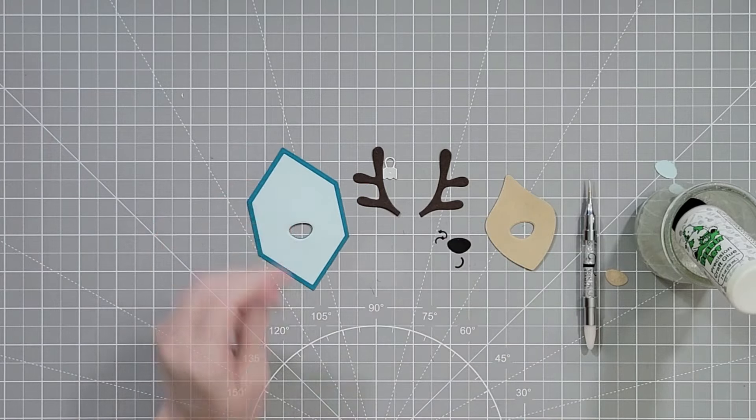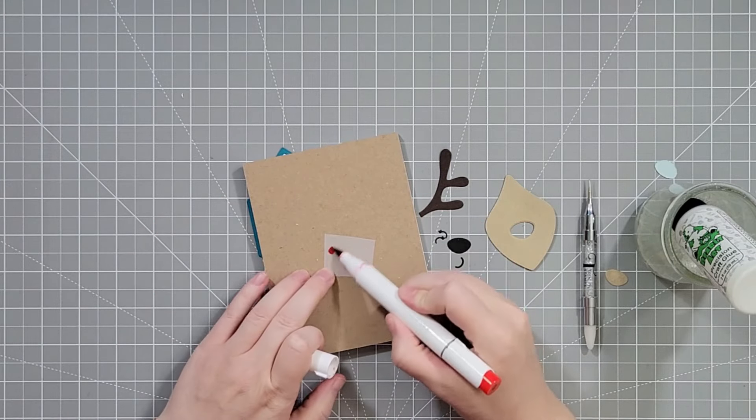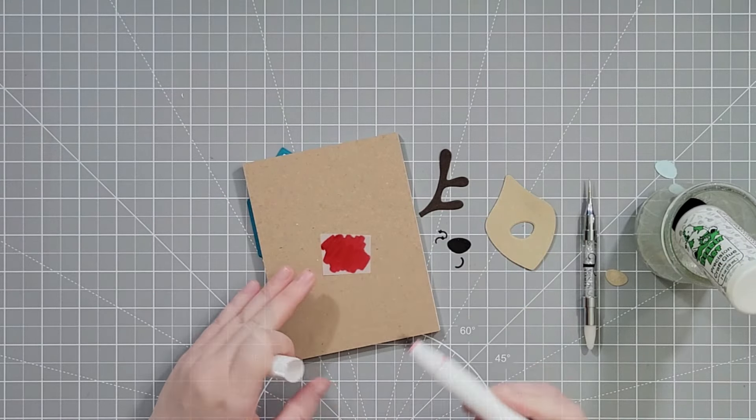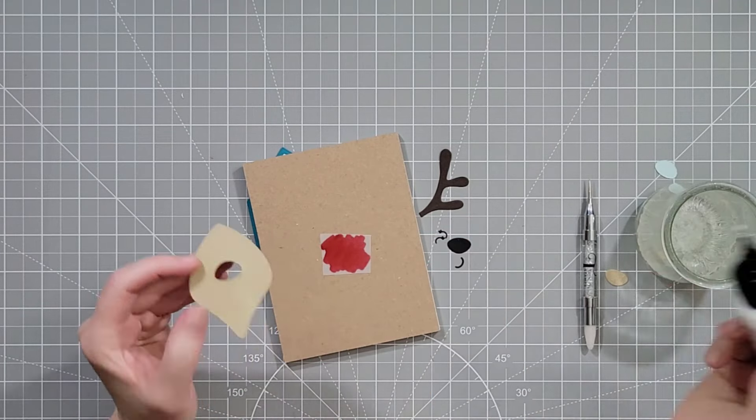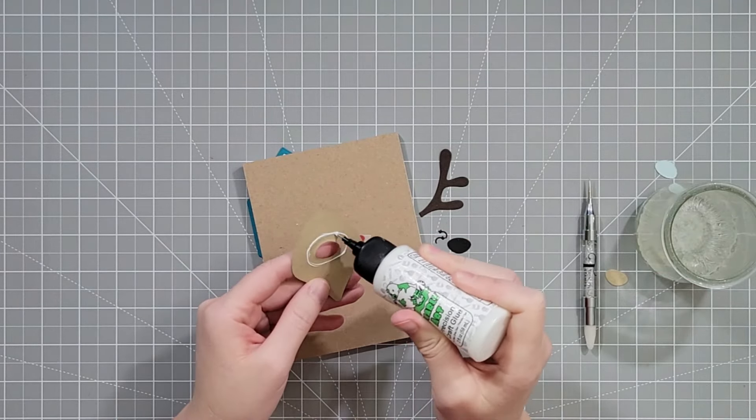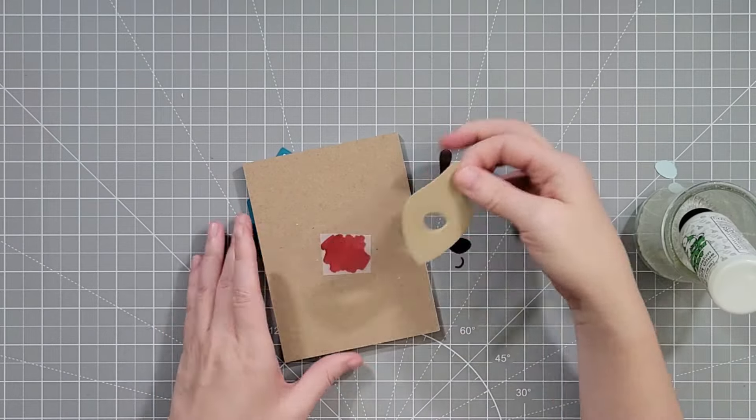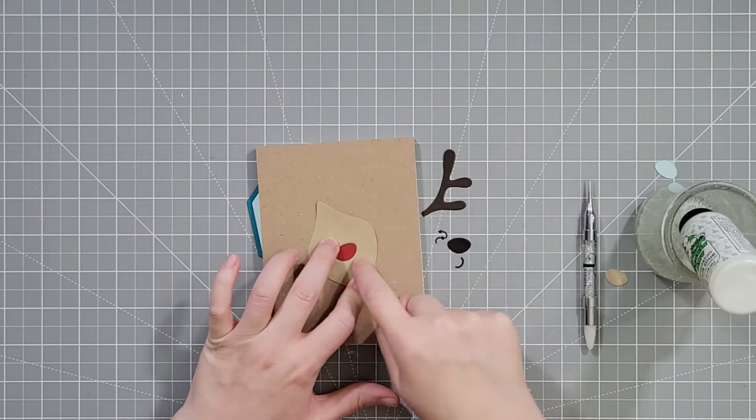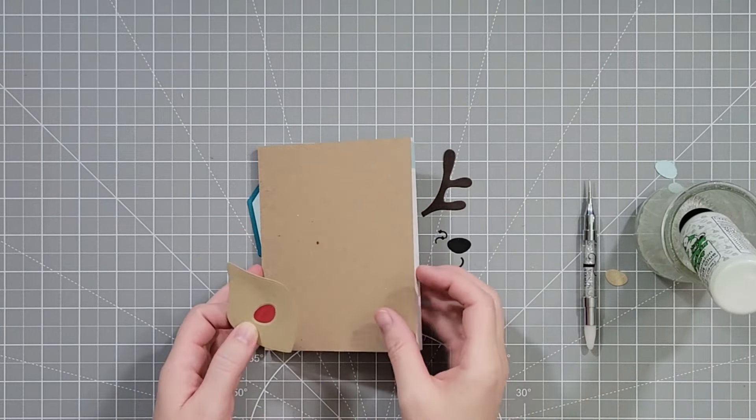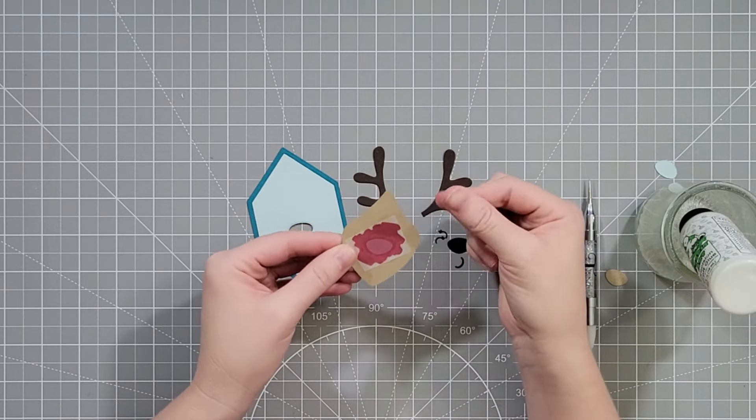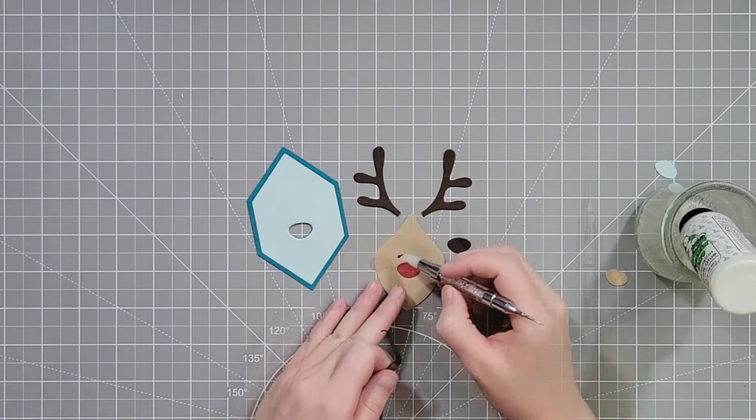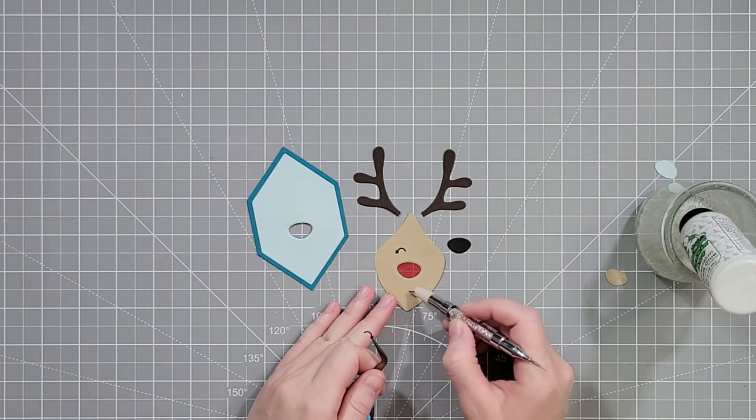I designed both of the emergency card essentials die sets for Trinity stamps and that hexagon actually fits on a pop-up die that's in that same set that is super easy to put together. So definitely take a look at that if you like an interactive card. Here I used a marker to color on some vellum and I'm going to put that behind the hole in the ornament and then that way we'll get kind of a red nose shining through.